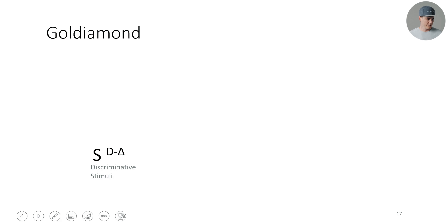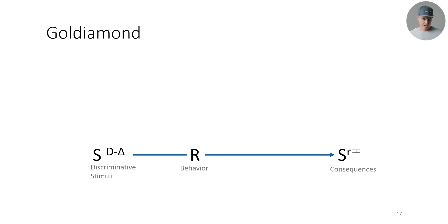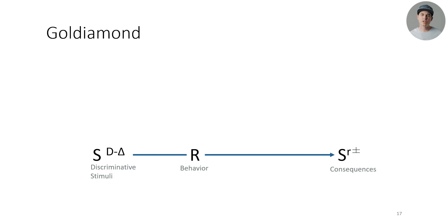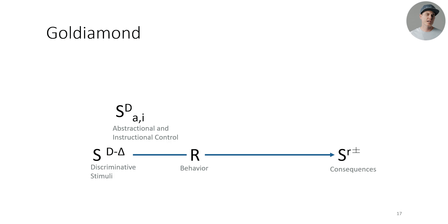So what did this look like? His actual conceptual model consisted of discriminative stimuli — things that we've seen in all of our models so far. Then that led to things like behavior, the response, and then you had your consequences. He also had terms for what you can think of as rule-governed behavior: abstractional and instructional control. And those can also lead to behavior and consequences as well.